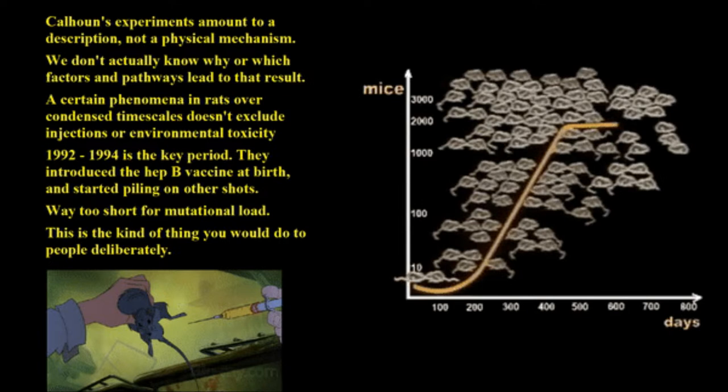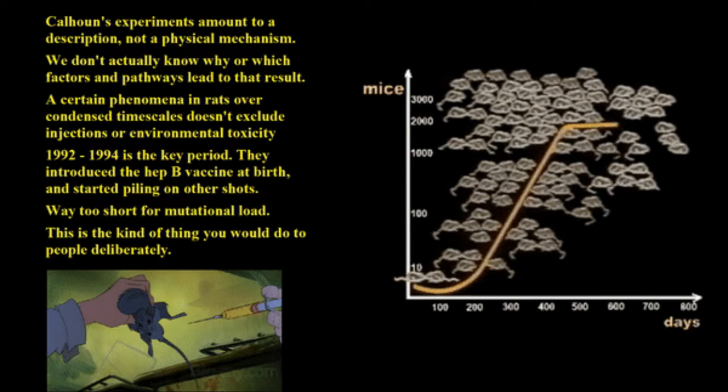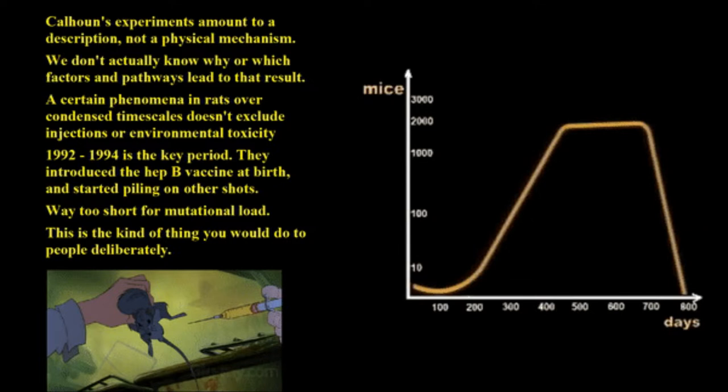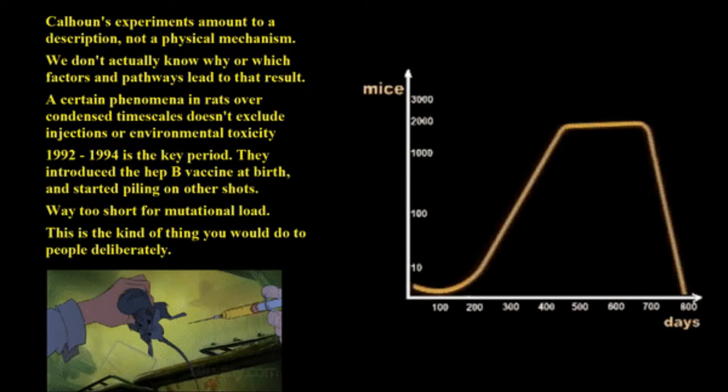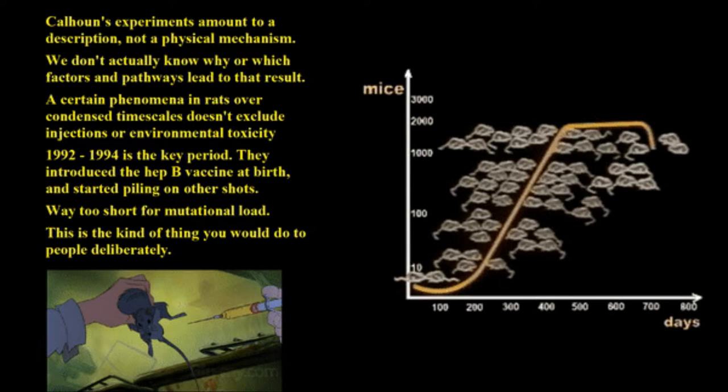He says 'way too short for mutational load.' The question is whether mutations can occur from one generation to the next. The answer is yes — if you get close to a nuclear weapon or source of radiation, you'll probably mutate a lot of your atoms. We can all mutate quite quickly.